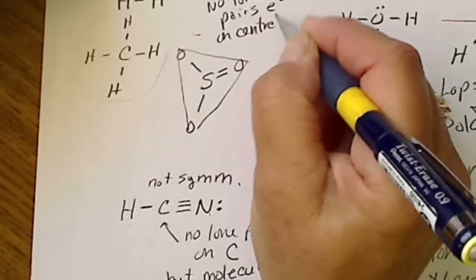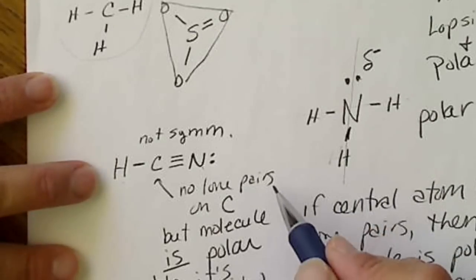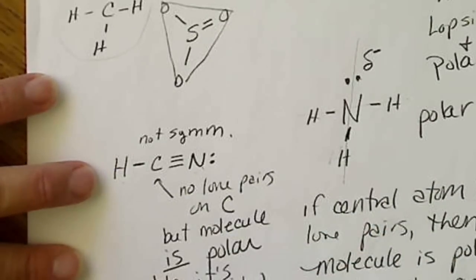But if we don't have lone pairs on the central atom, the molecule may still be polar if the molecule is lopsided.